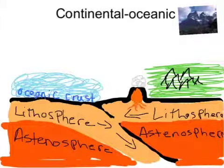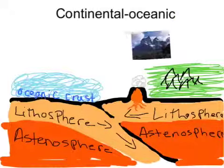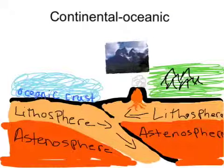Continental-oceanic is when the plate boundary is a convergent one where an oceanic plate meets a continental plate. The oceanic crust is here, the continental crust as the lithosphere goes down, and the asthenosphere stays. This is where the plates meet together. Here's an example of the Andes Mountains.